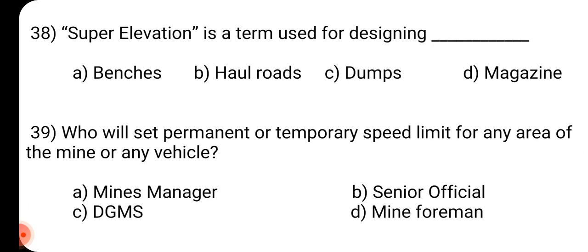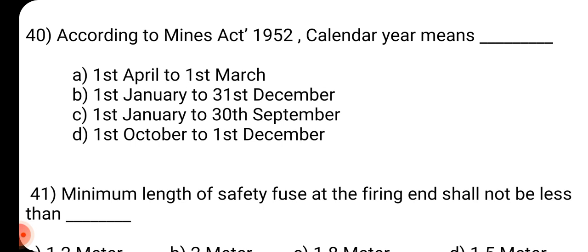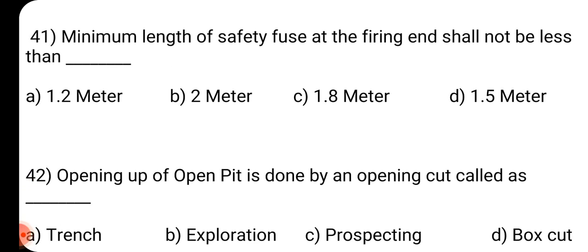Question number 38: Super elevation is a term used for designing dash. Answer is B: Haul roads. Question number 39: Who will set permanent or temporary speed limit for any area of mine or any vehicle? Answer is A: Mines manager. Question number 40: According to Mines Act 1952, calendar year means dash. Answer is B: 1st January to 31st December. Question number 41: Minimum length of safety fuse at the firing end shall not be less than dash. Answer is A: 1.2 meter.